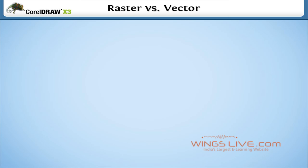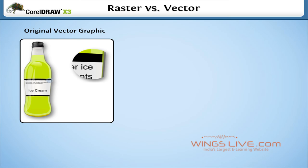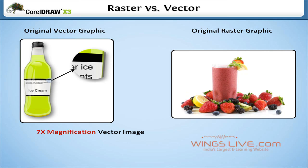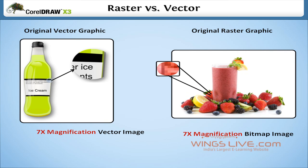For your better understanding, let's see the difference with an example. The original vector graphic is at left. The image in the upper right shows the degree of magnification seven times as a vector image. The image on the right shows the same magnification as a bitmap. Vector-based images can be extended indefinitely without degradation. Raster images are based on the scale of pixels and thus with a loss of clarity. These examples show the effect of vector graphics vs raster graphics.